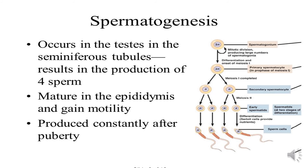Spermatogenesis occurs in the testes in the seminiferous tubules, resulting in the production of four sperms. They mature in the epididymis and gain motility, and are produced constantly after puberty.